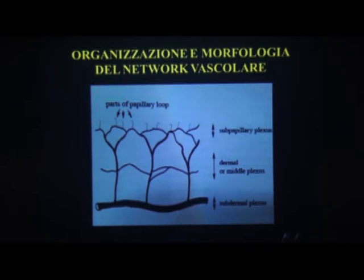Come diceva ieri il dottor Heidecker, se avevate presente l'immagine di quell'arborescenza con il tronco e con la chioma, molto spesso si ritrova nelle vene reticolari questa insufficienza che poi dà luogo all'arborescenza a livello cutaneo.